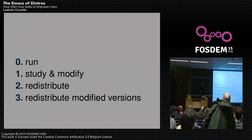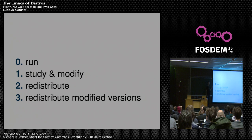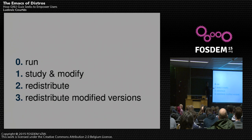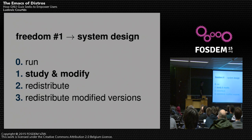So what does it mean concretely? If we take back those four freedoms of free software, how does the design of Emacs relate to those four freedoms? Of course we have licenses to guarantee those four freedoms, and the GNU GPL typically makes sure you cannot remove those freedoms. So that's the legal part of free software. But what does Emacs do to help with that?